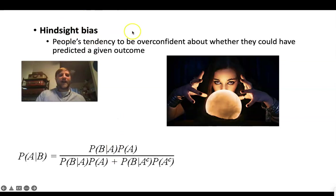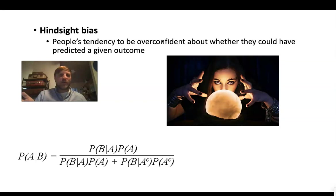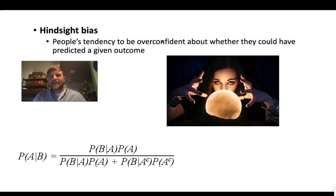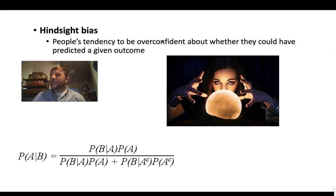We're all somewhat guilty of hindsight bias. For example — more political science, but the election of Donald Trump in 2016 — I thought he was going to get elected partway through December 2015. But there were a lot of people who didn't see it coming, and then after he won, all of a sudden they had reasons: 'here's why he won, and if I would have just known that, I would have been able to predict this.' Just be wary of that.